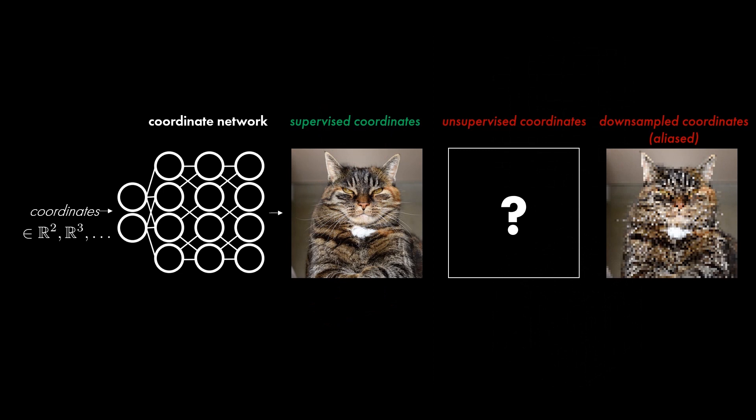However, coordinate networks are black boxes. Behavior at unsupervised input coordinates is difficult to predict, and current representations are not scale-aware, so we cannot easily ensure low-resolution network outputs are properly anti-aliased.